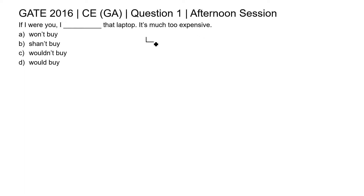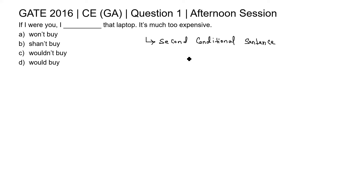This sentence is an example of a second conditional sentence. A second conditional sentence talks about a hypothetical situation. The form to make this type of sentence is: in the first part, 'if' plus simple past.